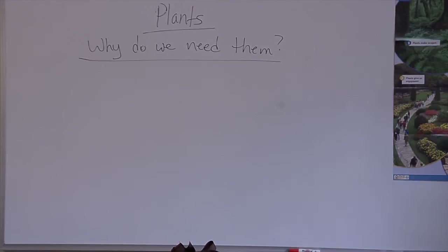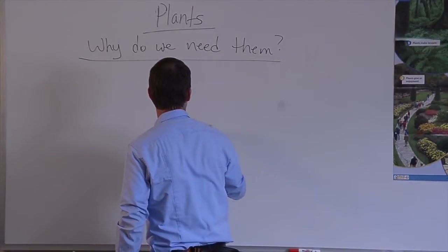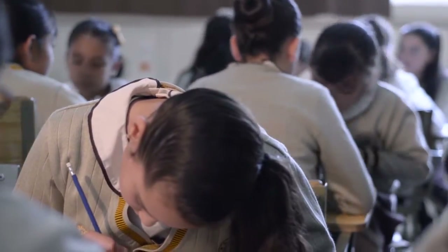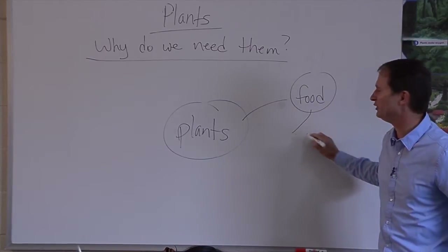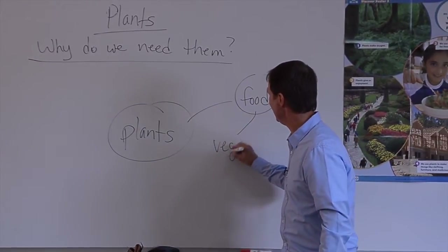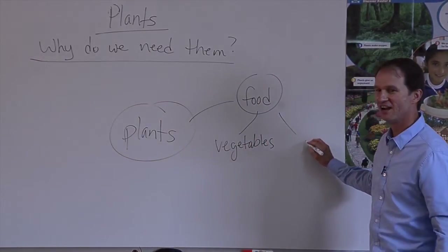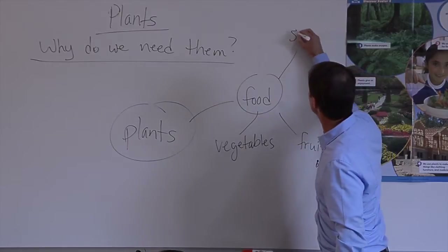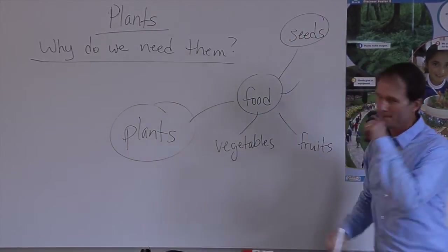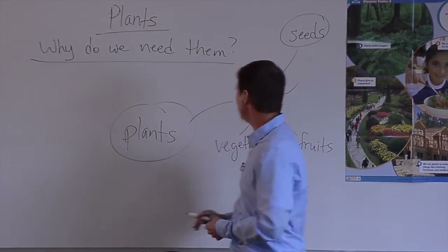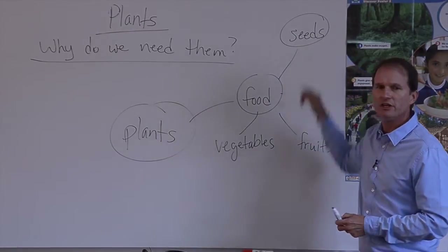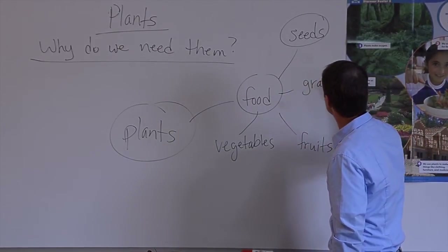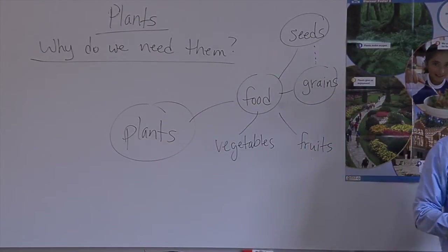Plants give us food. Let's make a mind map and branch it out — we could talk about food. What kind of food? Vegetables, seeds, fruits — great. Any other kind? Seeds, and grains too. Do you ever eat corn flakes or oatmeal? That comes from plants — we call those grains. Grains are kind of like seeds.